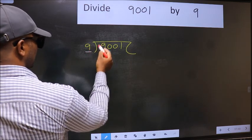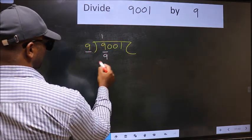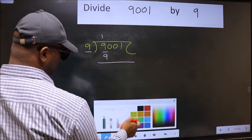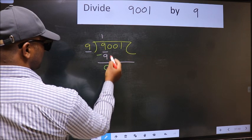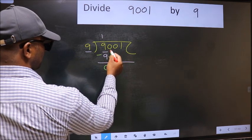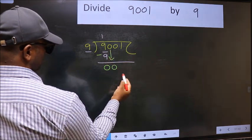When do we get 9 in 9 table? 9 once 9. Now we should subtract. We get 0. After this, bring down the beside number. So 0 down.